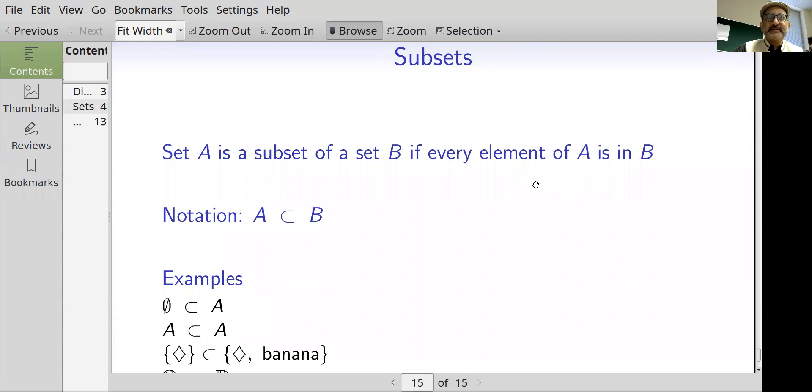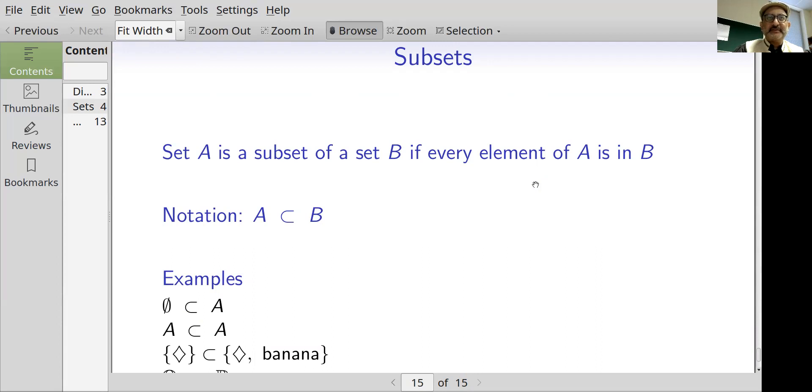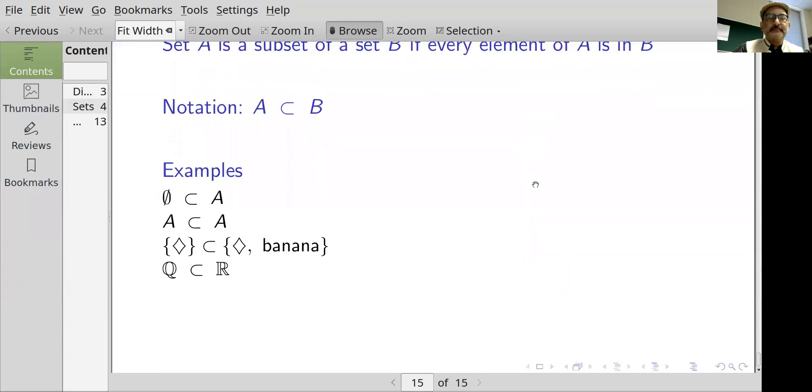We also need the notion of a subset. Mostly we are going to be dealing with either the real numbers or subsets of the real numbers. Set A is a subset of a set B if every element of A is in B. We use this notation which is read as A is a subset of B. Some examples: the empty set or the null set is considered to be a subset of all sets A. The set A is a subset of the set A because every element of A is in A.